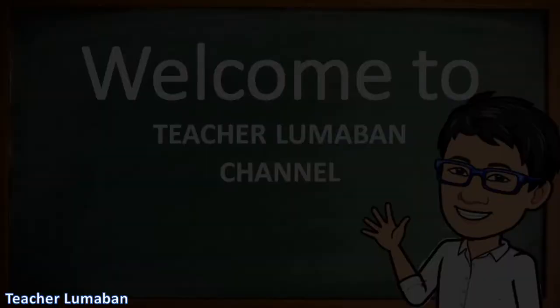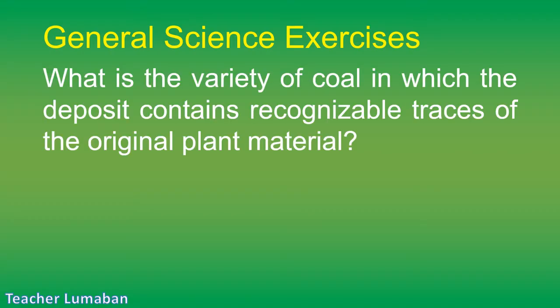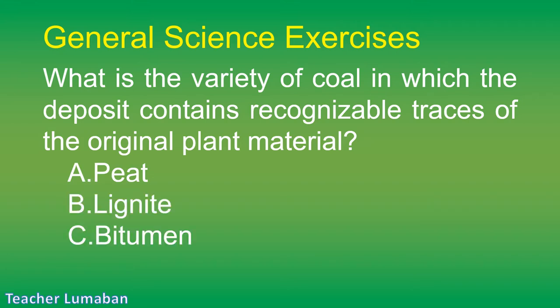What is the variety of coal in which the deposit contains recognizable traces of the original plant material? Letter A: peat. Letter B: lignite. Letter C: bitumen. Letter D: anthracite.